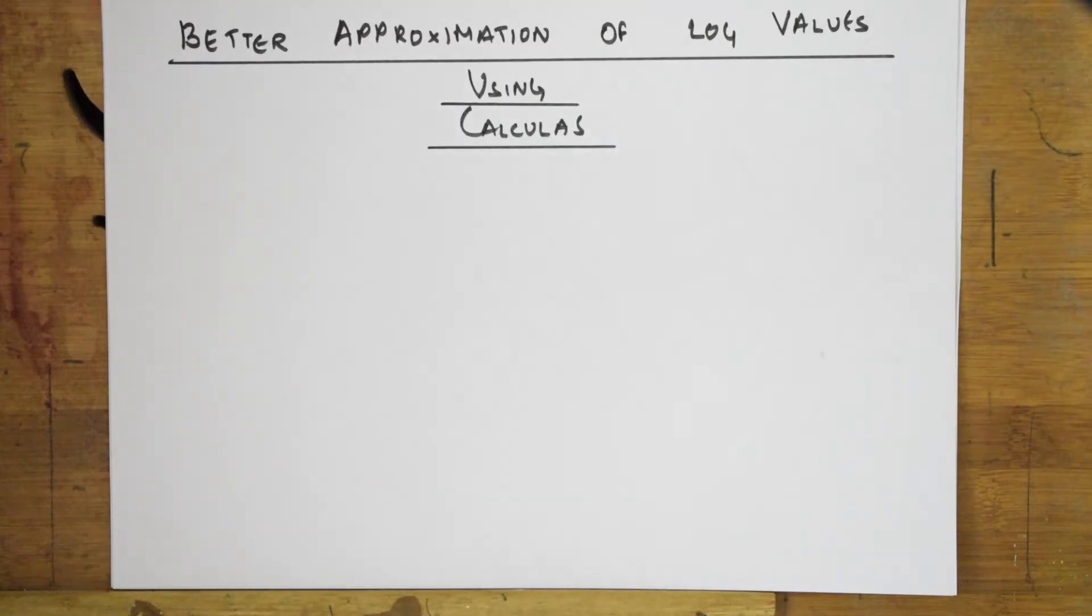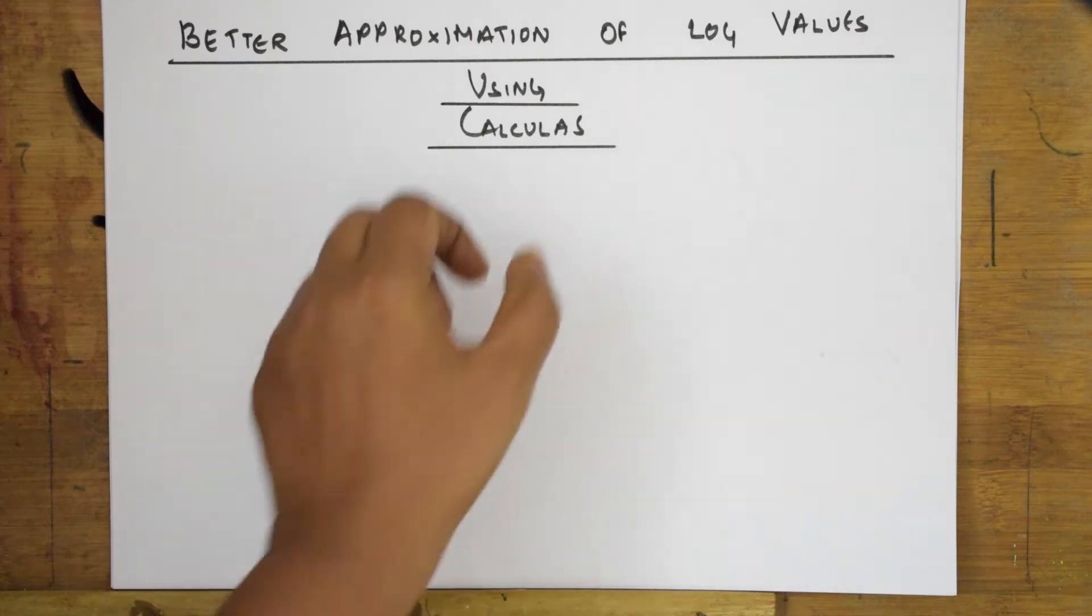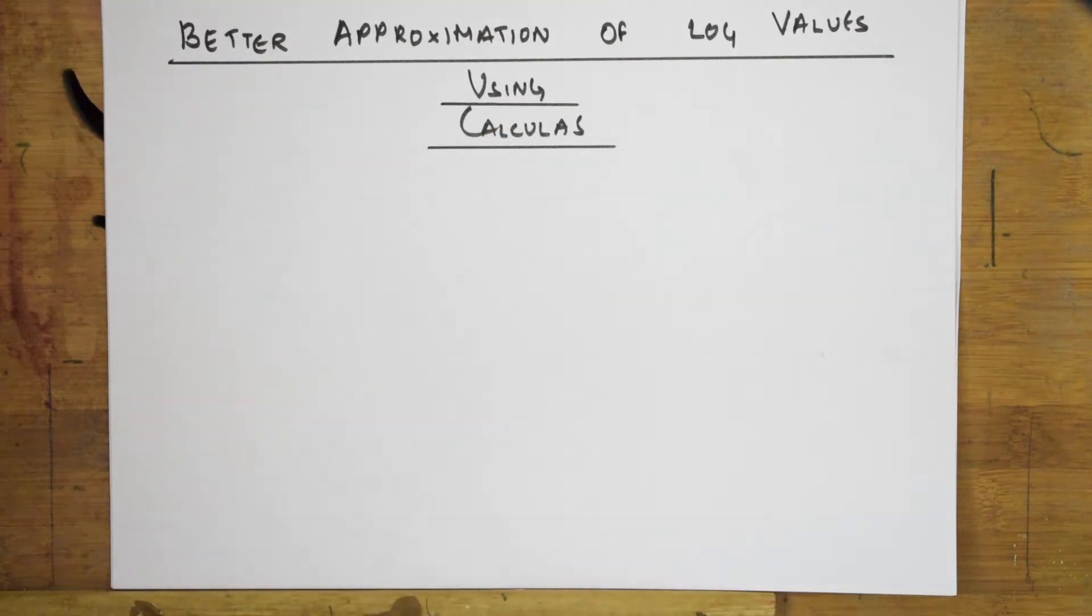Welcome back students to one more series in the log series where I have already given you the trick to find out log without log table. In the second video, we practiced the concept where to apply log in Nernst equation for electrochemistry. Now, I will be giving you a perfect trick to find out log without using log table. Here I will be using the calculus part. This concept can be used for any number given to you.